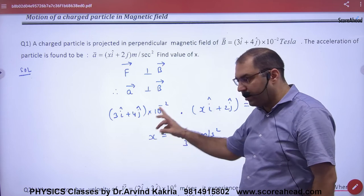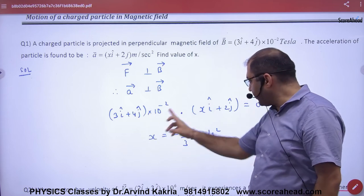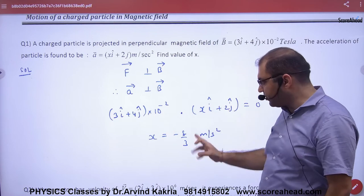So we write these two vectors, put a dot, we calculate the dot product. You will have x's value.